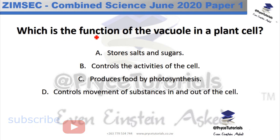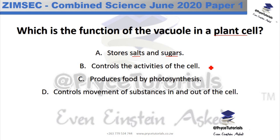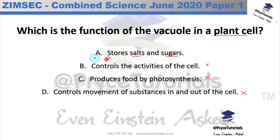The next question asks which is a function of the vacuole in the plant cell. The vacuole stores salts and sugars. Looking at the other options: controlling cell activities is the nucleus; producing food is not a vacuole function; controlling movement of substances in and out is the cell membrane. So the answer is option A.